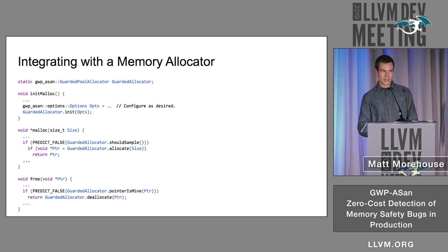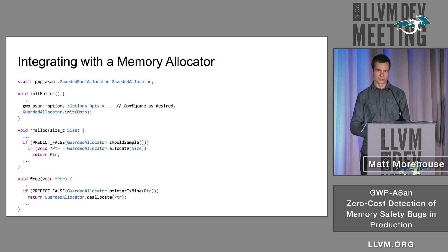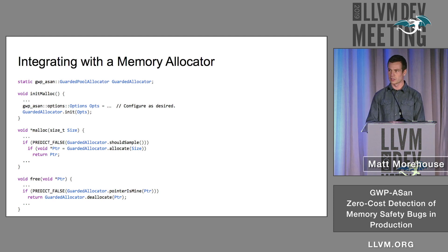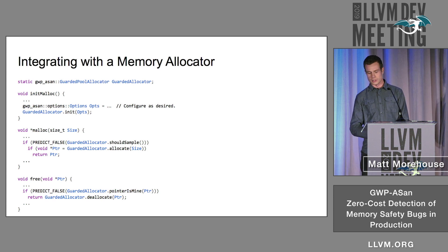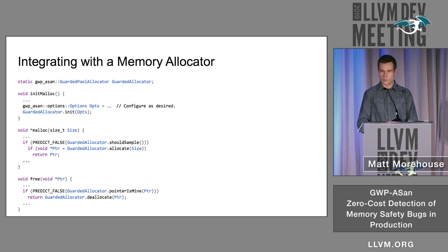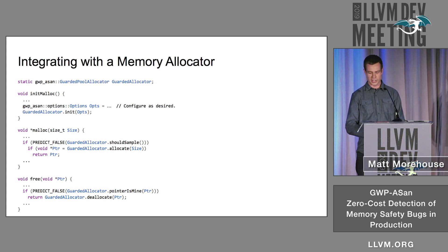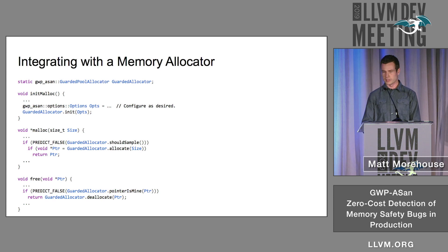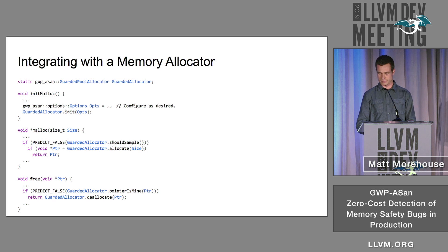If you'd like to integrate GWP-ASAN with your own allocator, it's very simple. You just need to insert a few lines of code during your malloc initialization to initialize GWP-ASAN, and then insert a quick sample check on the malloc path — if it returns true, you do a guarded allocation, otherwise you do a normal malloc. On the free path, you do a quick check to see if it's a guarded allocation, and if it is, you do the guarded deallocation step.